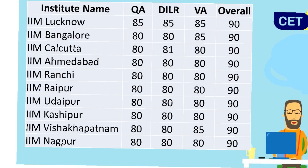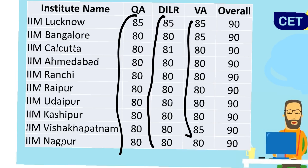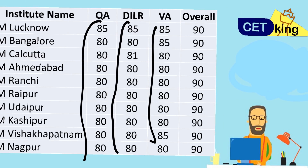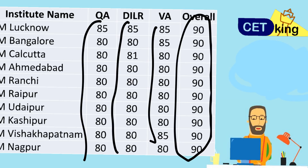Please pause the video and look at the cut-offs for the other 10 IIMs. You can see here all of them are 80 to 85 percentile sectionally. But don't think 80-85 means you'll get a call — 90 percentile overall is the bare minimum. For example, 2 lakh people give the exam; 90 percentile means the top 10 percent, which is 20,000 people. But IIMs are only going to give a call to about 1,200 people, so obviously they have to take only the top candidates.